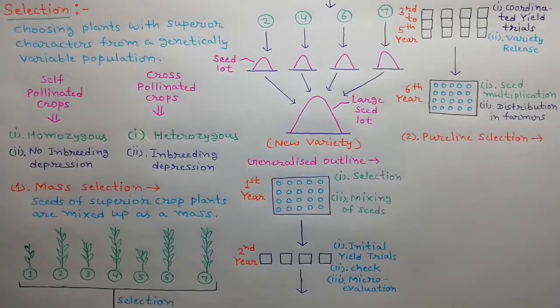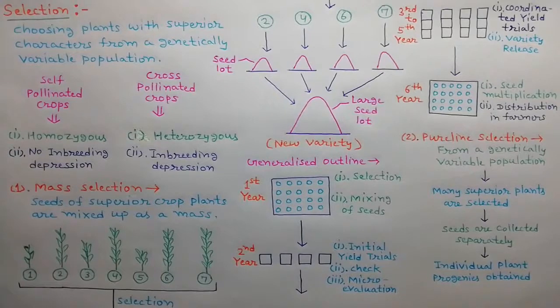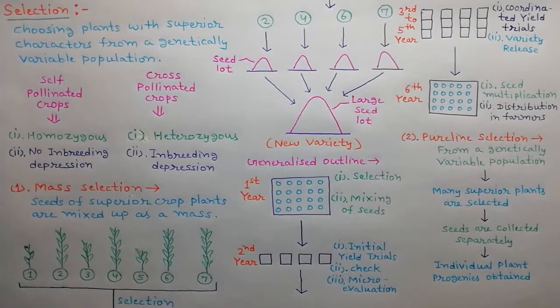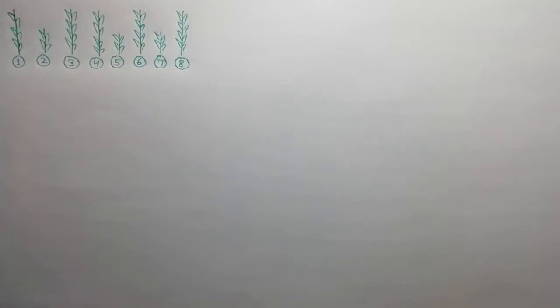The second method of crop improvement in self-pollinated crops is pure line selection. In pure line selection, many superior plants are selected from a population, their seeds are collected separately, and individual plant progenies are grown. Suppose there are 8 plants in a row. We observe the plants for superiority and similarity and found that plant number 1, 3, 4, 6, and 8 are superior and similar.